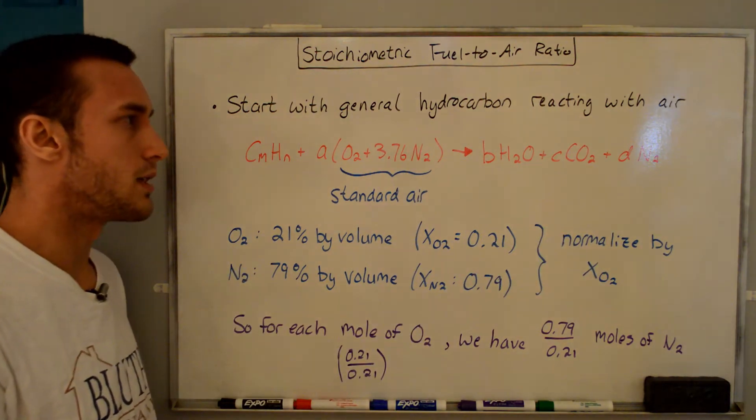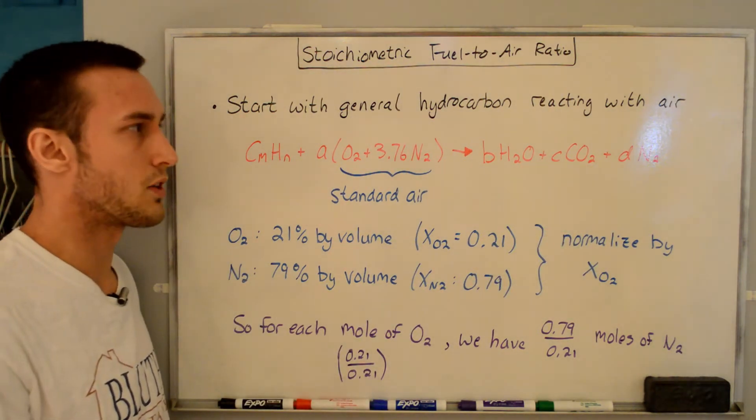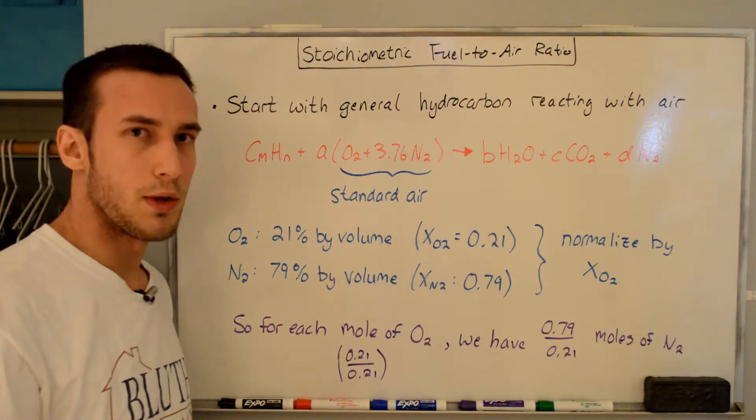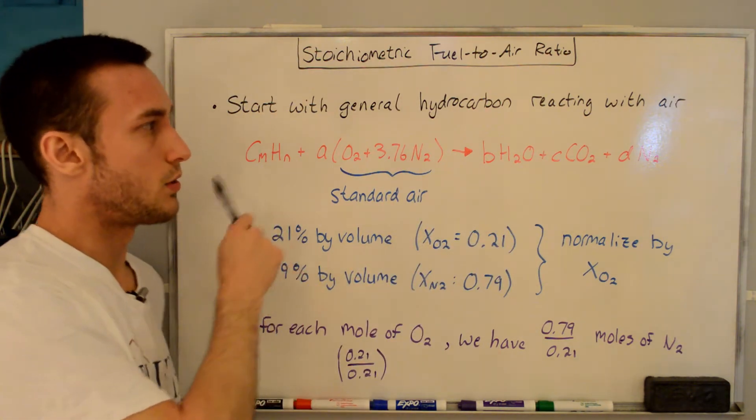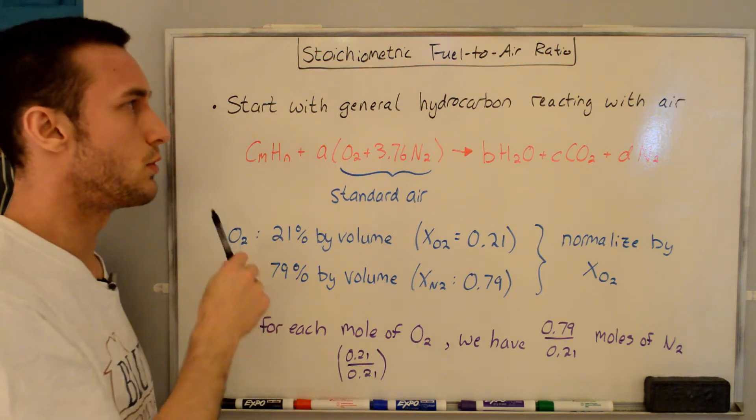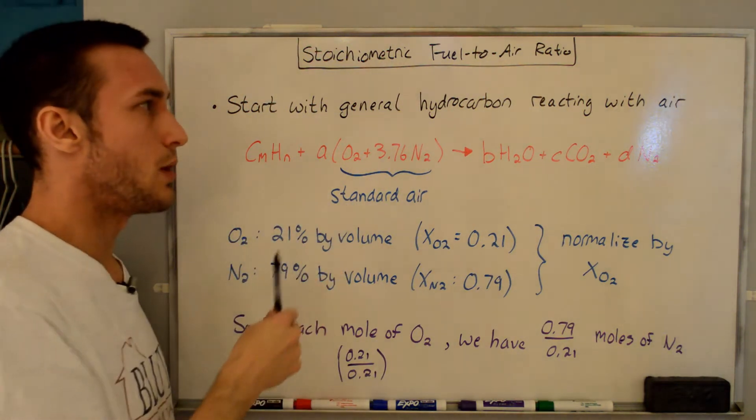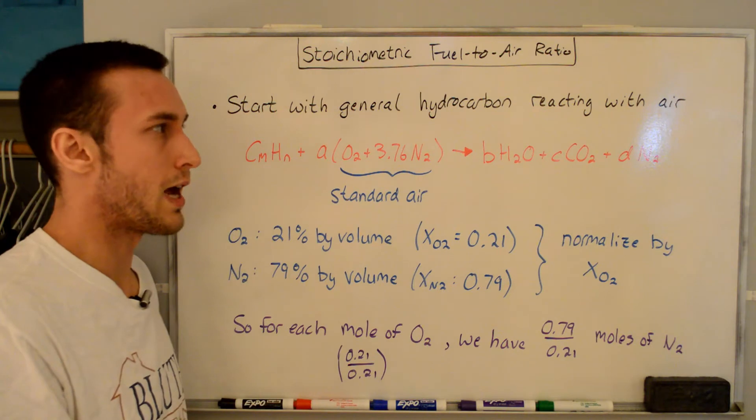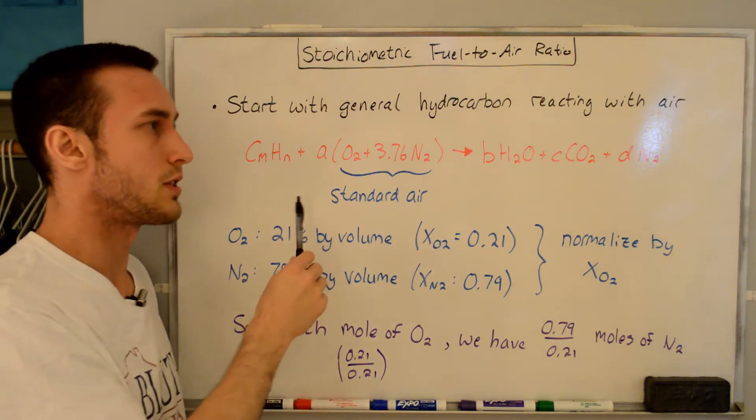This is a stoichiometric reaction, which means that there's no excess fuel or oxidizer on the right-hand side. Note that this is a global reaction mechanism, so it's a one-step process here. In reality, when you have a fuel reacting with an oxidizer, you can have hundreds of steps of this reaction, but in this case we're looking at a global reaction to simplify things down.